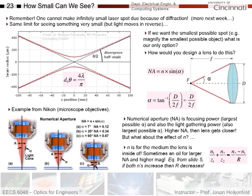To calculate alpha, you've got a triangle: D over 2 for one side and F for the other side, and you can calculate alpha using this relationship. If alpha is small, you can assume the tangent of the angle becomes the angle. This term of numerical aperture is the focusing power, which is also the largest possible value for alpha. If I had greater focusing power, the lens would be focusing in tighter and alpha gets larger. I'm getting the lens closer and closer to what I want to look at — when you move your eye closer to something you can see it in higher resolution. Moving the lens closer gives a larger alpha and a higher numerical aperture.